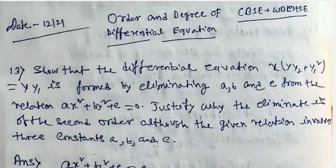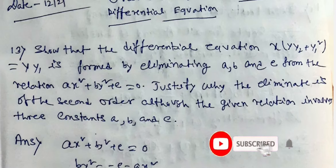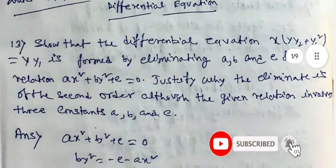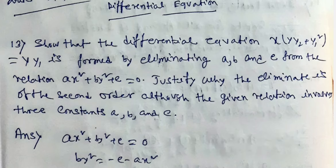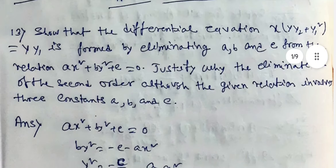First question: Show that the differential equation X(Y·Y2 + Y1²) = Y·Y1 is formed by eliminating A, B, C from the relation AX² + BY² + C = 0. Justify why the eliminate is of second order although the given relation involves three constants A, B, C.